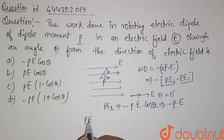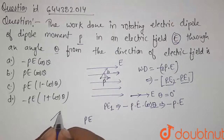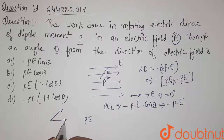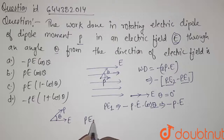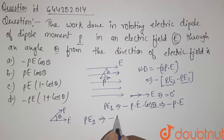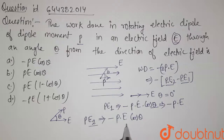Now when this dipole is rotated by angle theta, the angle between the dipole and the electric field is theta. So the final potential energy, PE2, will be equal to minus p times E times cos(theta).